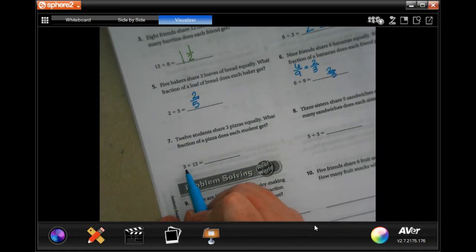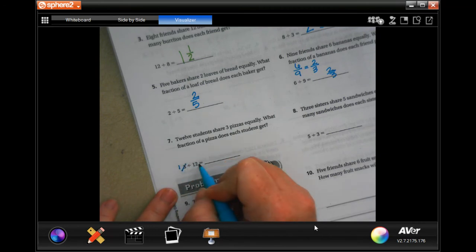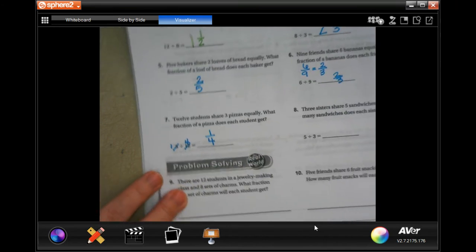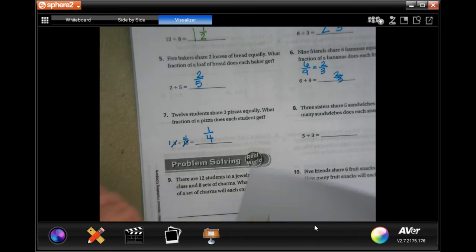Again, three goes into twelve. Well, three goes into three once, three goes into twelve four times, so your fraction is going to be one fourth. Let me show you how and why I just did that.